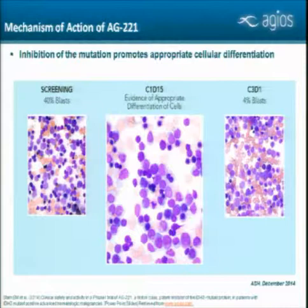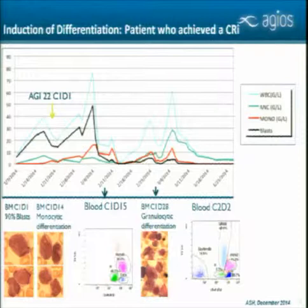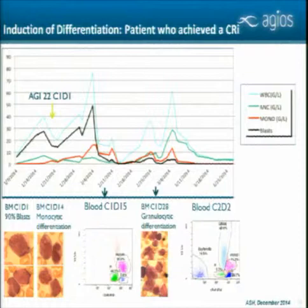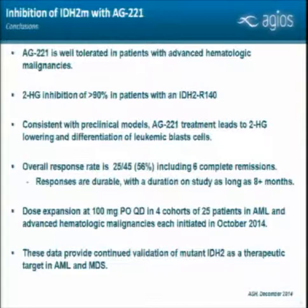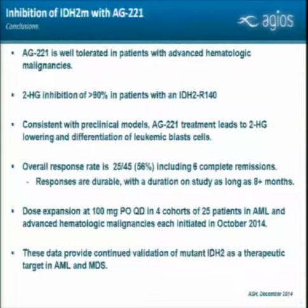In another patient who started AG221 at cycle one, day one, there was a high white blood cell count composed of blasts. By cycle one, day 15, we began to see an increase in monocytes and a decrease in blasts, visible by flow cytometry and cytology. By cycle one, day 28, the white blood cells had matured, with increases in neutrophils and monocytes and a decrease in blasts. In summary, AG221 is well-tolerated in patients with advanced hematologic malignancies, achieves good 2-HG suppression, and the mechanism is consistent with preclinical models—an overall response rate of 25 out of 45 (56%), with durable responses up to eight months.